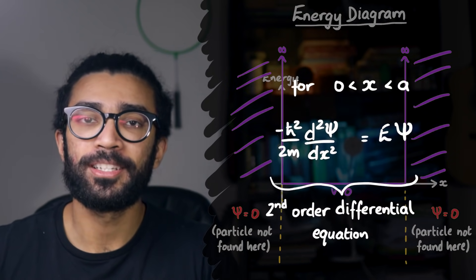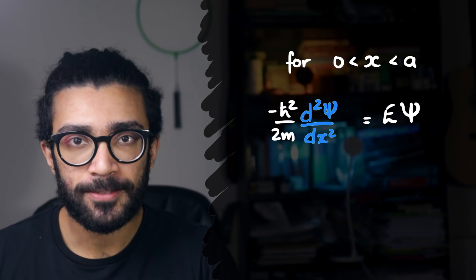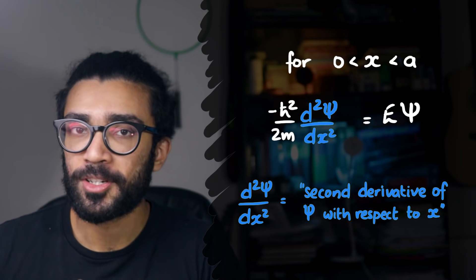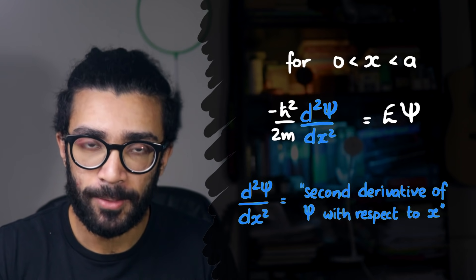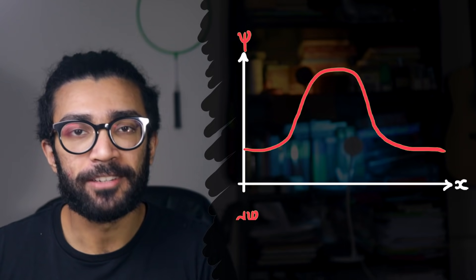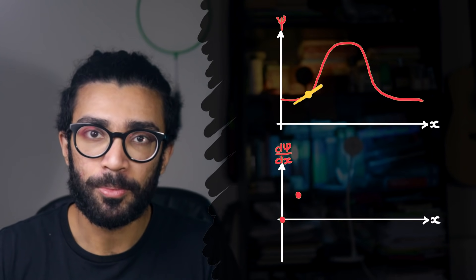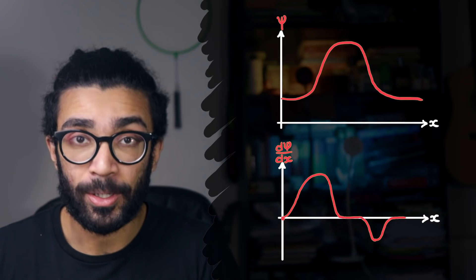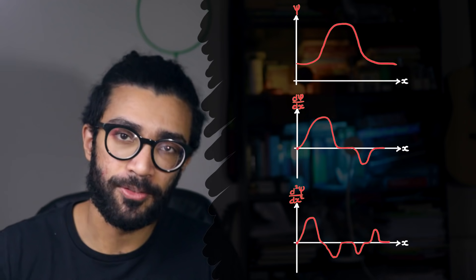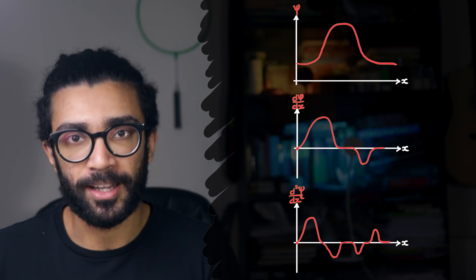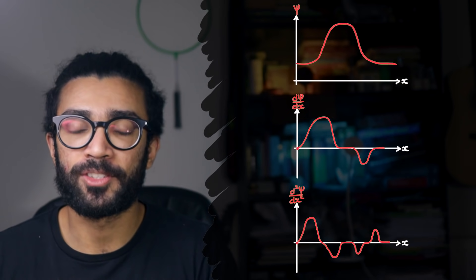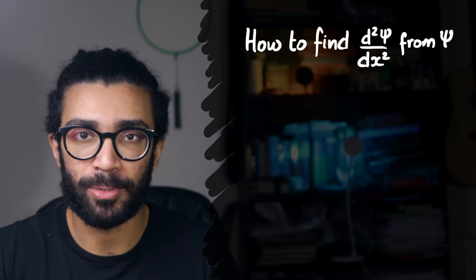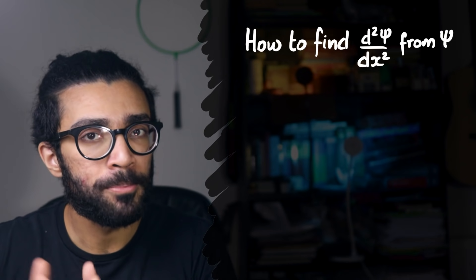For those of you that are not familiar with this weird looking thing, d2 psi by dx squared, this basically refers to what's known as the second derivative of our wave function, psi. For example, if our wave function, psi, ends up looking like this, then we can find its gradient at every single point, or its slope, if you prefer, at every single point. And that becomes d psi by dx. And we can find the gradient or slope of that function, and that gives us d2 psi by dx squared. This is a very brief description of derivatives. Again, more resources in the description below. But what we've just seen is how to find d2 psi by dx squared if we know what psi is.